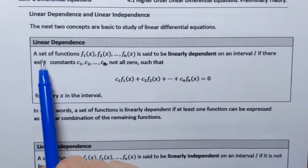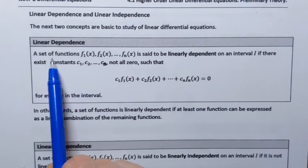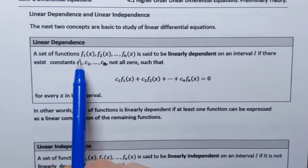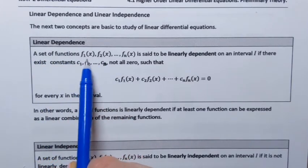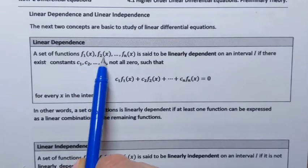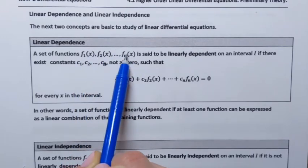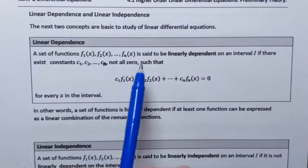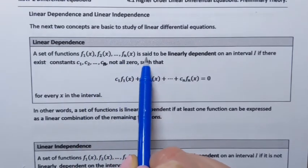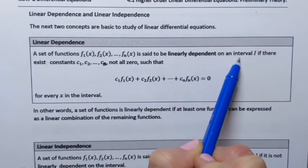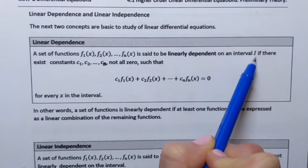A set of functions — in other words, a collection of functions — denoted as f1(x), f2(x), and so on, a finite set, is said to be linearly dependent on some interval i.